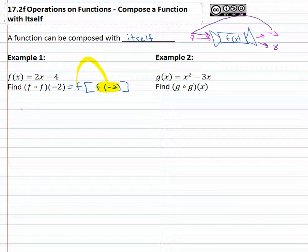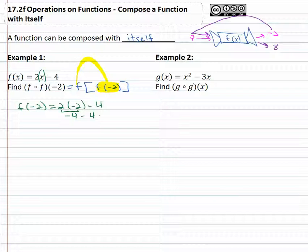So let's do that. What is f of negative two? Well, replacing the variable with negative two, two times negative two minus four. Multiplying gives us negative four minus four, which is negative eight.